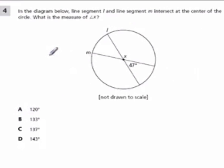In this problem right here, it says line segment L, so that is this line segment right here, and line segment M, that's this line segment right here, intersect at the center of the circle. What is the measure of X? So X is just this variable right here and represents this angle.